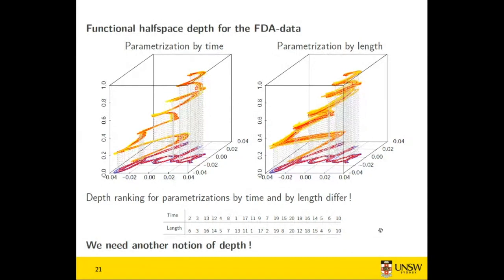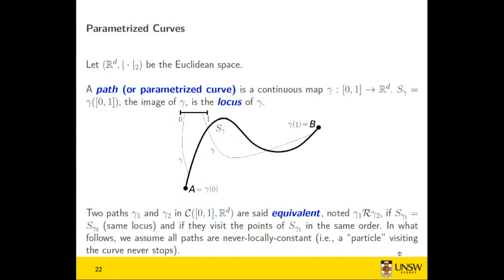For our brain fiber application, we need a different notion of depth. I need to introduce some mathematical concepts first. A parametrized curve, or path, is a continuous map gamma from [0,1] to R^d. We denote S_gamma as the image of this map — the locus of gamma. For each point on [0,1], gamma maps it to a point on this locus.